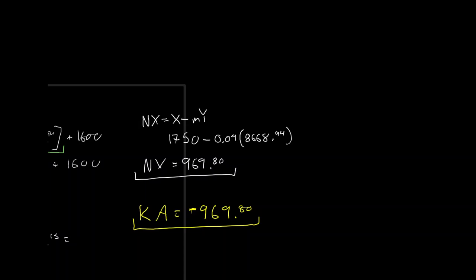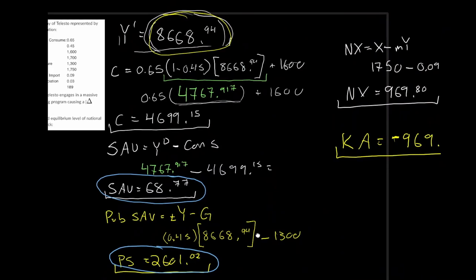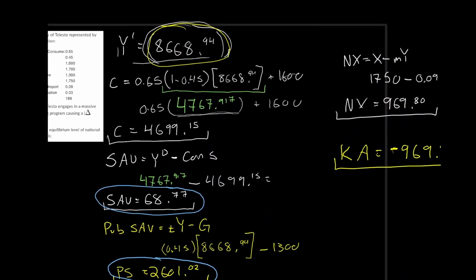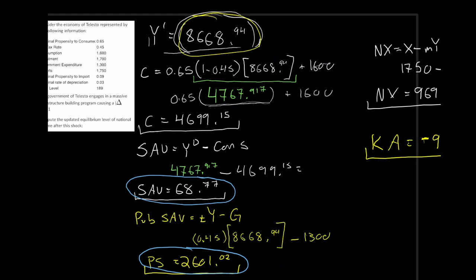That was the process of solving each aspect of the model. Any exam question will just ask for one of these parts — net exports, capital account, consumption, savings, public savings, etc. It wouldn't ask you to do all of this at once. Now, to the actual question at hand, which we haven't addressed yet: the government of Telesto engages in a massive infrastructure building program causing a change in G equal to 91.